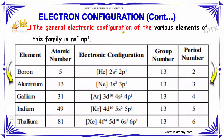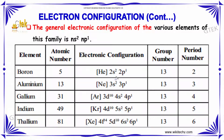The general electronic configuration of the various elements of this family is ns²np¹. For boron the atomic number is 5, aluminium is 13, gallium is 31, indium is 49 and thallium is 81. Each element follows the standard ns²np¹ configuration, with the group number and period number associated for each particular element.